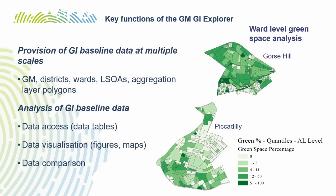The key functions of the GI baseline include gaining GI baseline data at multiple scales — from the neighborhood polygon through wards right up to the Greater Manchester scale. The image shows two different wards in Greater Manchester with green space percentages for the different polygons within those wards. Importantly, the GI Explorer also enables the analysis and presentation of GI data through tables, visualizations, and the ability to compare GI data for a selected space to other areas across Greater Manchester.